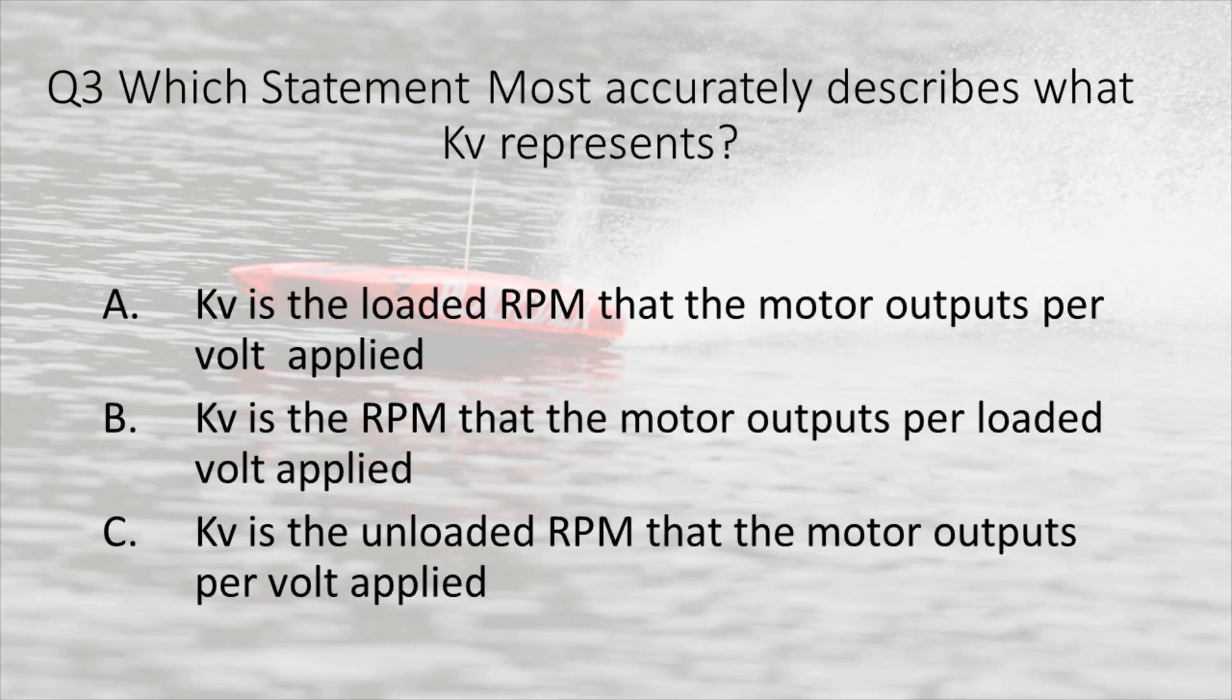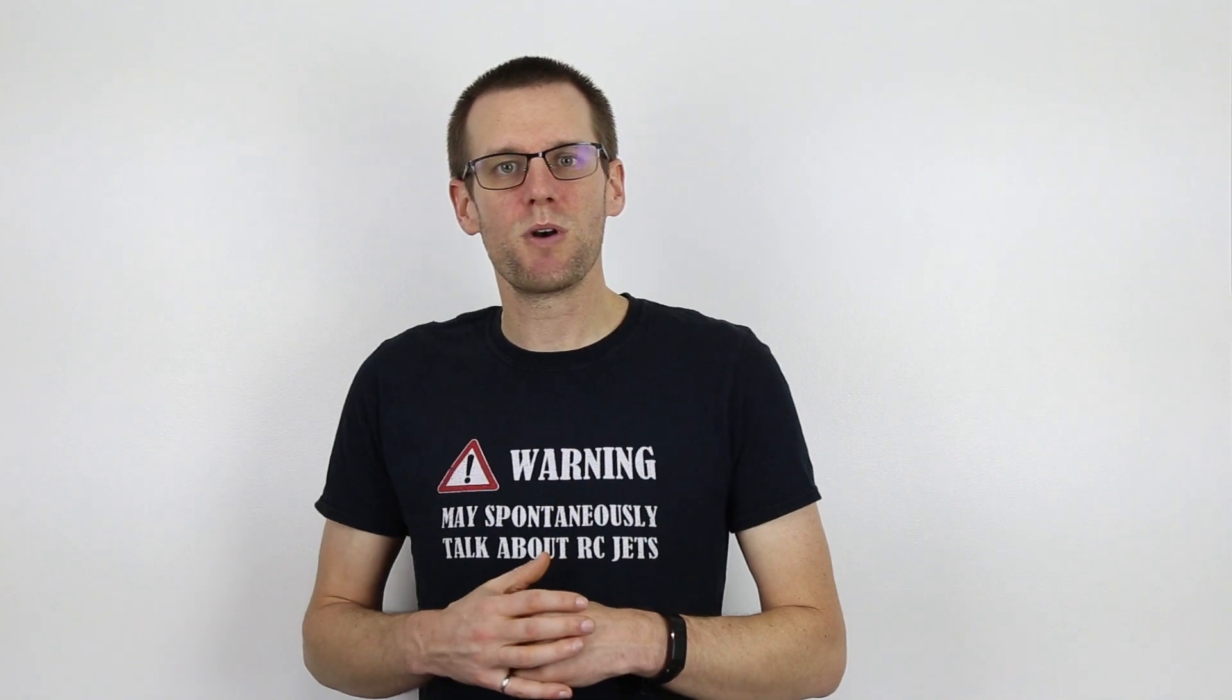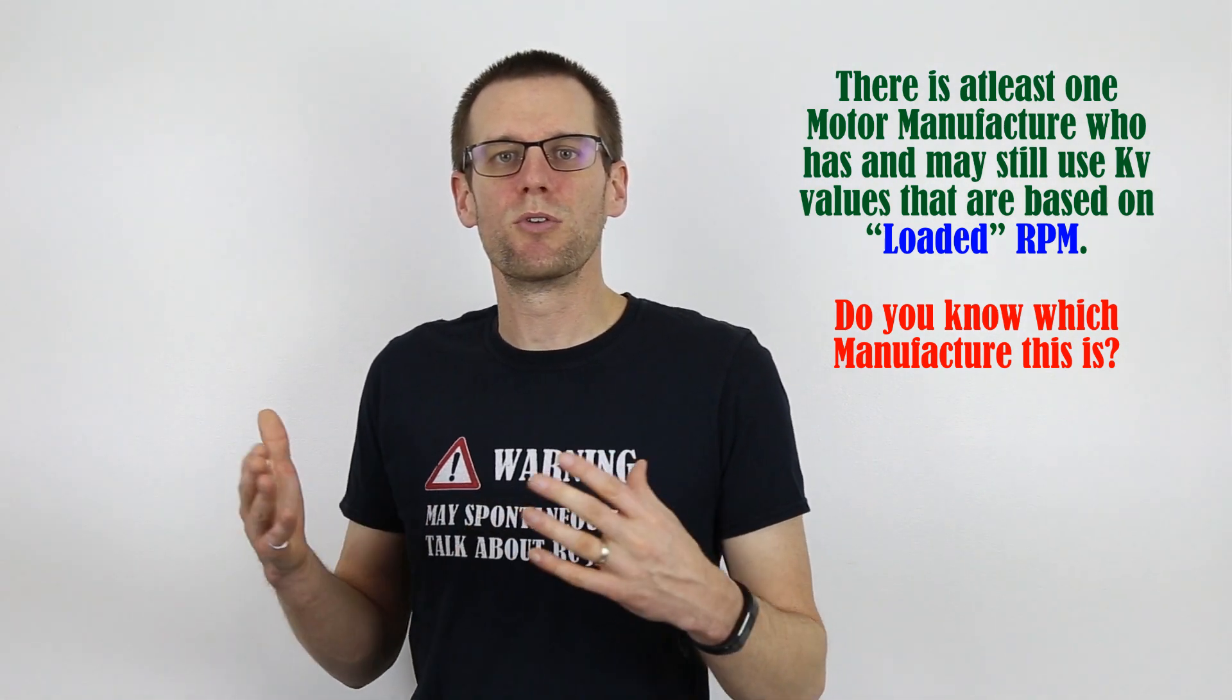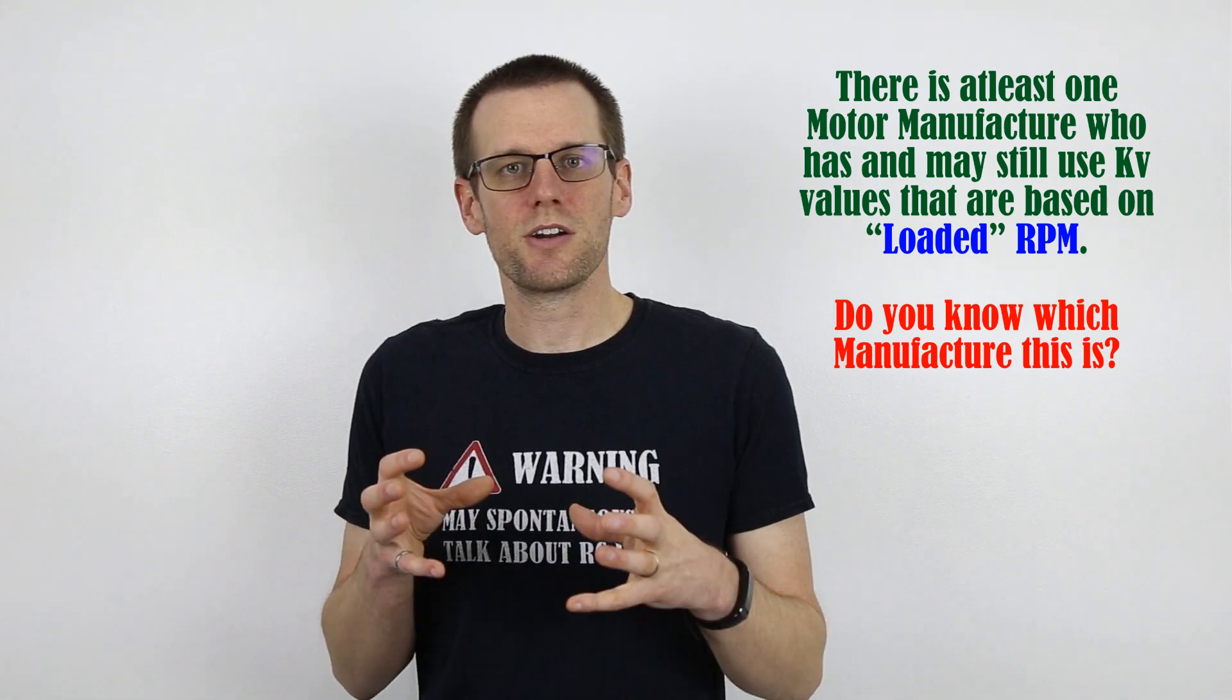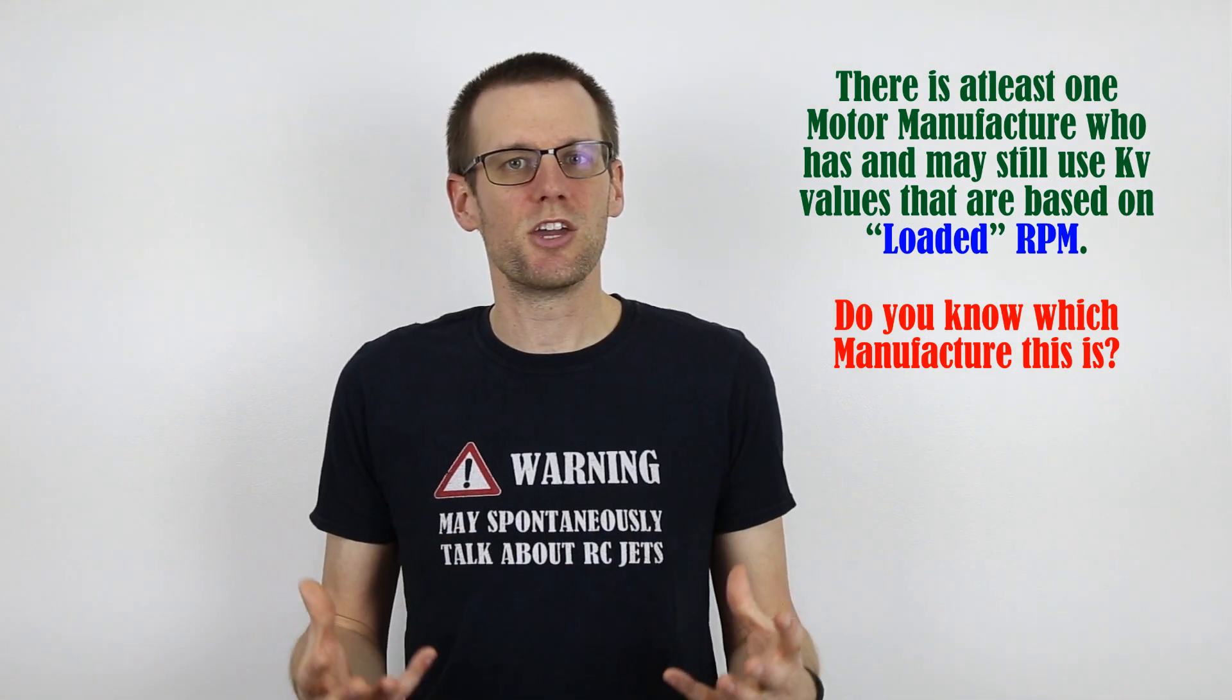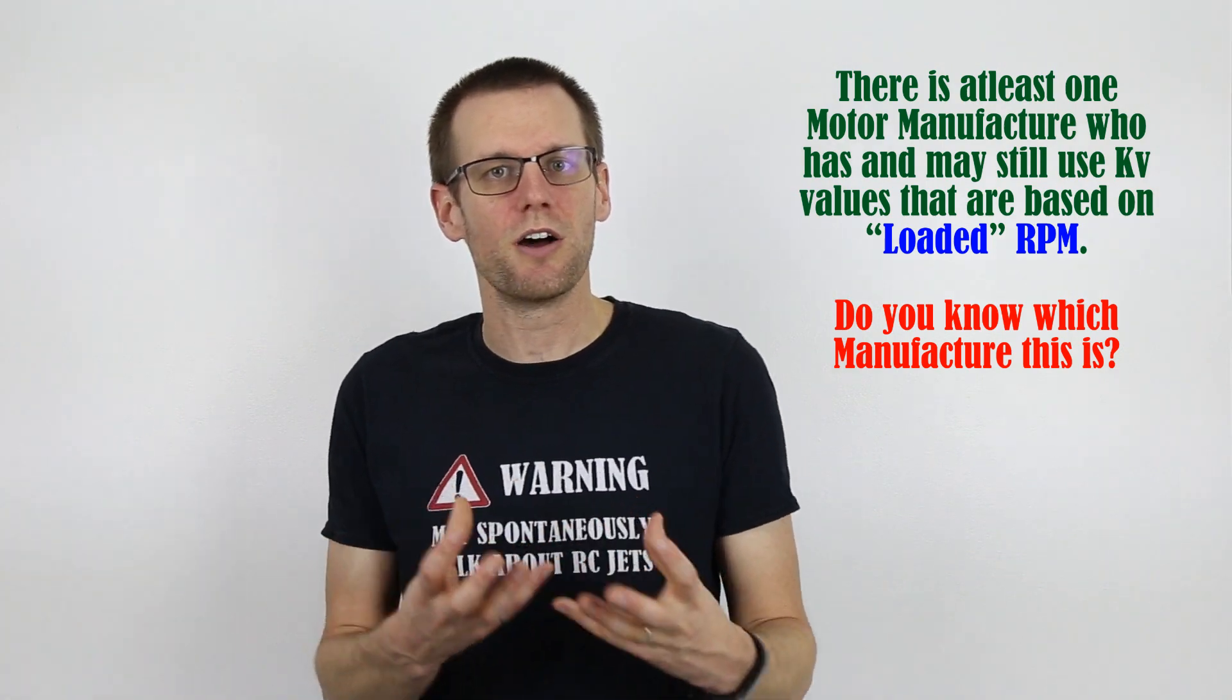Question number three: what most accurately describes what KV represents? The first answer says that a motor's KV value is the loaded RPM. As soon as we read the words loaded RPM, we can essentially stop right there. If you were to specify motors with a KV value that represents loaded RPM, this would cause all sorts of trouble. A loaded value does not have a definitive amount of load applied to it. If you load that motor significantly, you get a low KV value. If you load it lightly, you get a higher KV value.